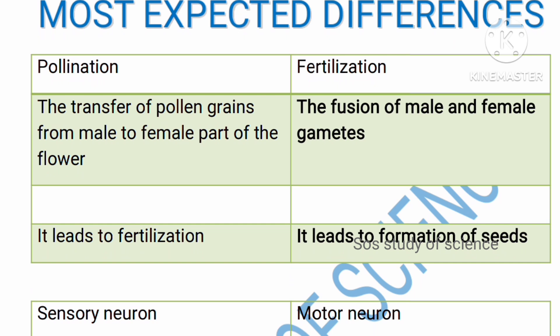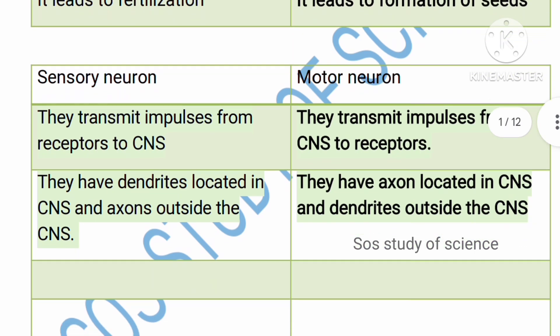Pollination is the transfer of pollen grains from the male to female part — that is from the anther to the stigma. Fertilization is the fusion of male and female gametes, also called germ cells or sex cells. Pollination always leads to fertilization, and fertilization later leads to the formation of seeds. It is very important to know the difference between pollination and fertilization.